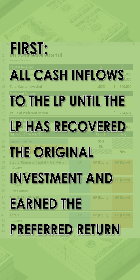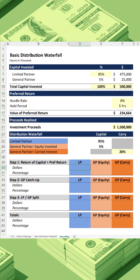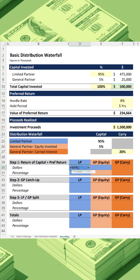In a distribution waterfall, the investors have to get their capital back plus any preferred return before any carried interest can be earned. We need to confirm there's enough cash in the investment proceeds to cover both the return of capital and the preferred return. So we're going to use the MIN function to compare total capital invested plus the preferred return in F17 against total proceeds in F21, and then multiply that by our percentage below. We'll paste this across and link to their pro rata contributions.